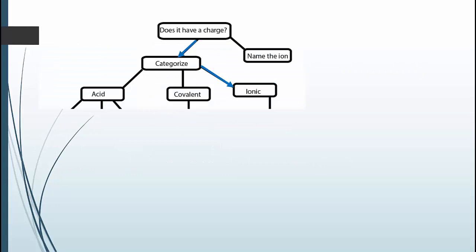The very first step in naming is to categorize the compound. We name acids differently from ionic compounds and from covalent compounds. If it has a charge, it's an ion, and it's named according to the ion. We'll talk about this in the middle of ionic nomenclature. From here, if something is neutral, it may be an acid, a covalent compound, or an ionic compound.